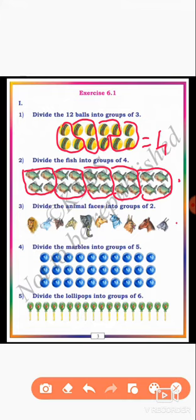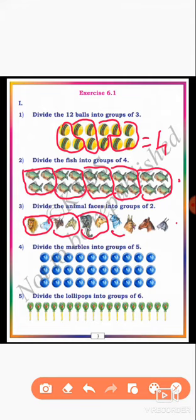Dear students, 10 animal figures are given. You can divide equally with each group having 2. I make a group: 1st 2, 2nd 2, 3rd 2, 4th 2 and 5th 2. Dear students, I equally divided into 5 groups, each group having 2 fishes.